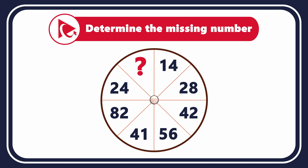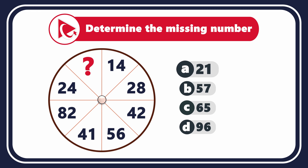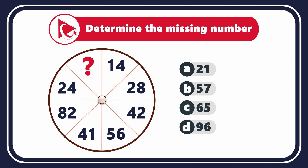You need to determine the missing number and select it out of four possible choices: choice A 21, choice B 57, choice C 65, and last but not least choice D 96.